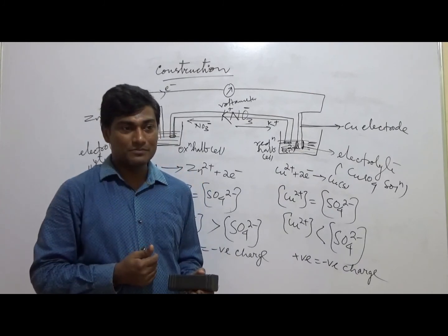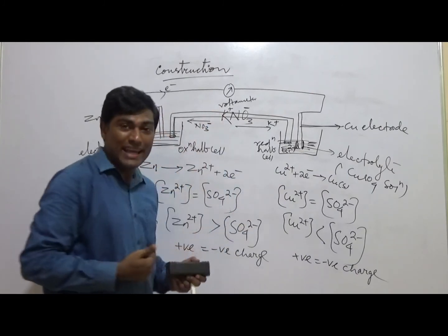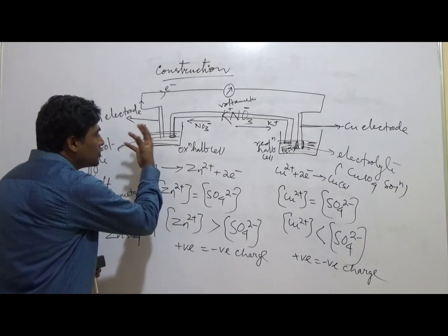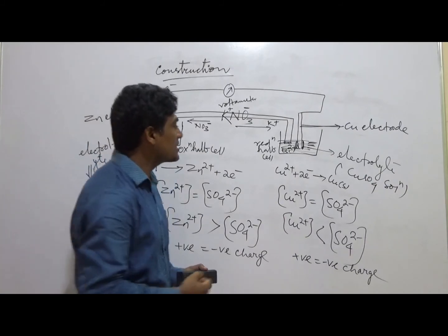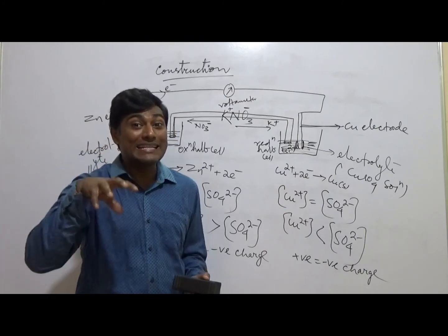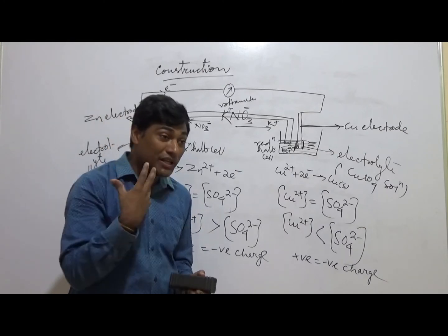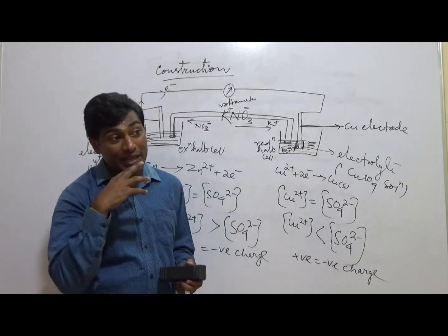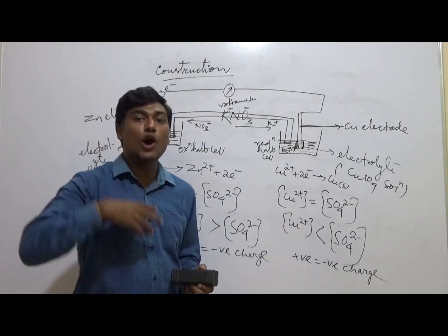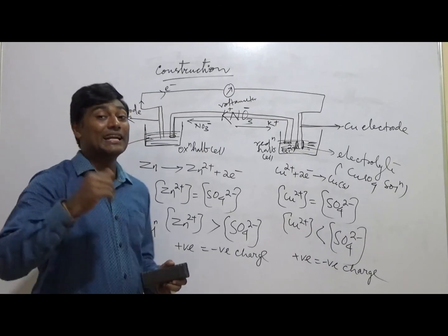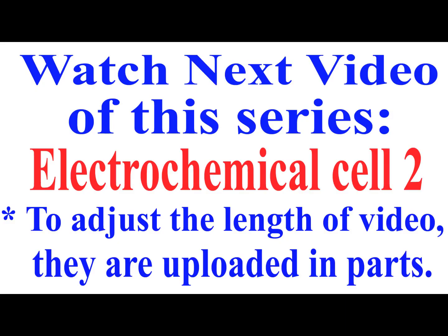What happens next? How will we know what voltage we will get? We must know what electrode potential is. By knowing the electrode potential, we can predict how many electrons are produced in the oxidation half cell and how many are received in the reduction half cell. We will now discuss electrode potential.